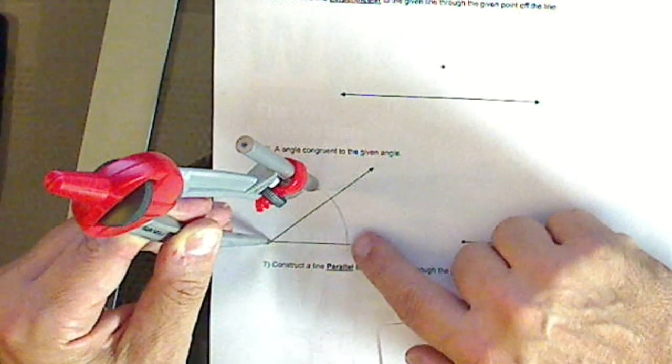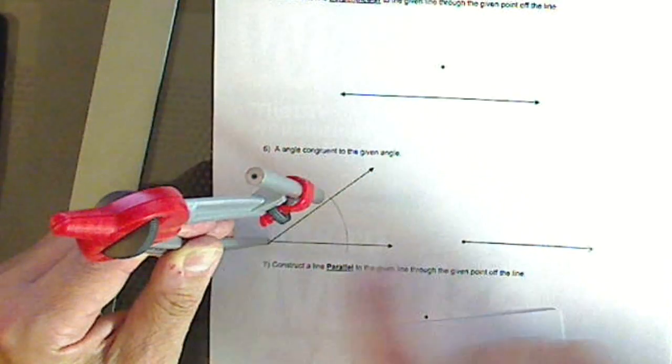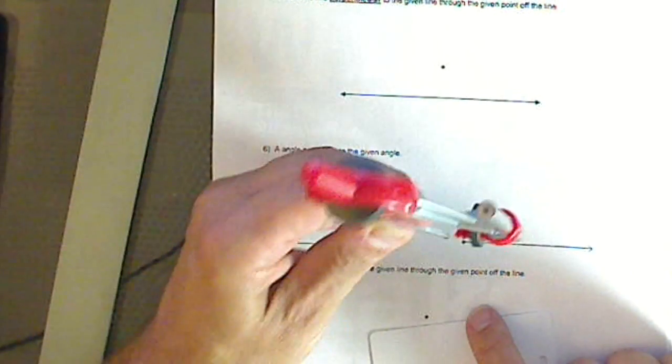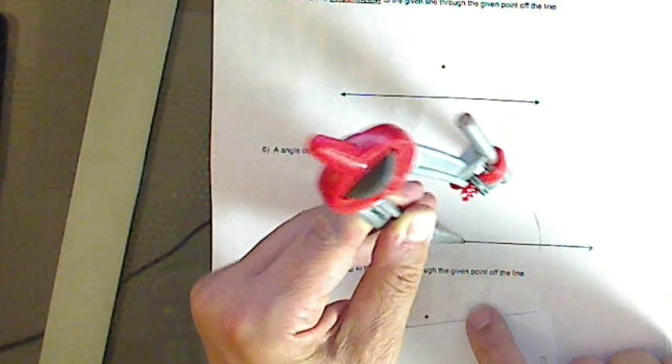We're going to measure how much arc in a moment, but first of all, I want to draw the same amount of arc equidistant from the vertex. So I come over here, and I draw.